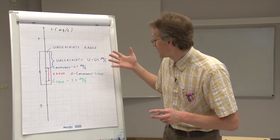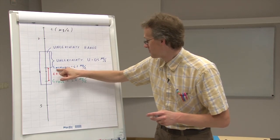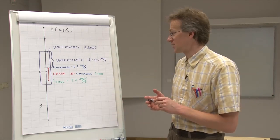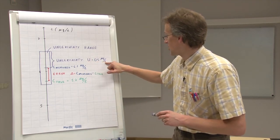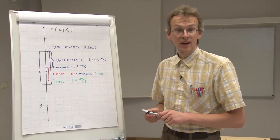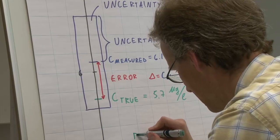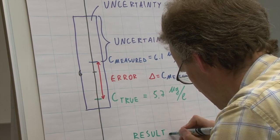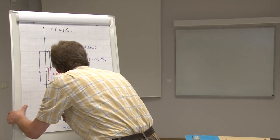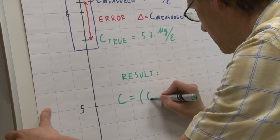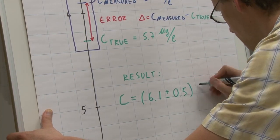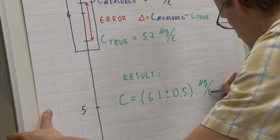Now, if we have made this measurement and obtained this measurement result, and we have made uncertainty estimation, taking into account all the uncertainty sources which are influencing the measurement result, and we arrive at this uncertainty estimate, we can present our measurement result. And this would look like this: our C is equal to 6.1 plus minus 0.5 micrograms per liter.